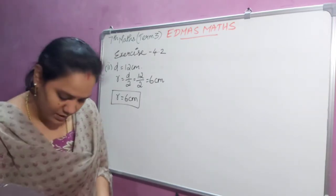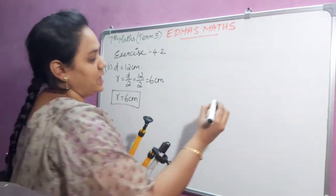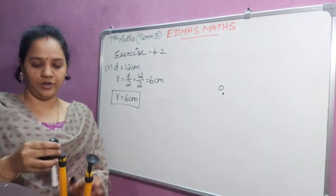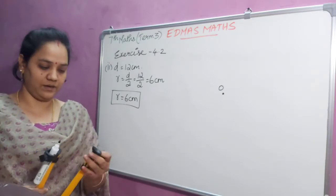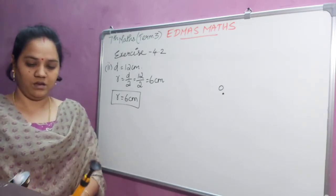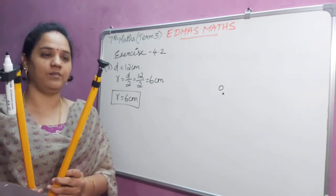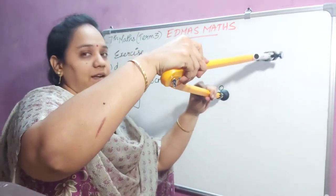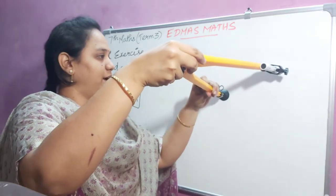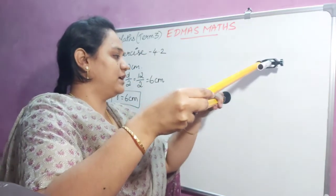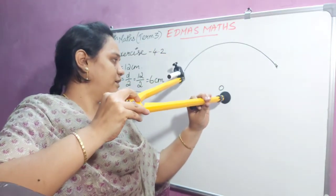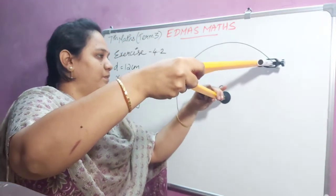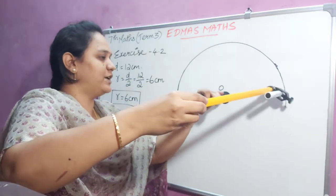Using this radius we are going to construct the circle. First, let me take a point — this is the center of the circle. I am going to take 6 centimeter in my compass. I have taken 6 centimeter in my compass. Fixing your needle at the center point and I am going to draw the circle — you can rotate the needle.